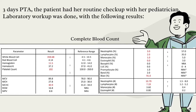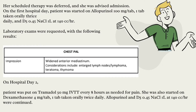Laboratory workup was done and her scheduled therapy was deferred; she was advised admission. On the first hospital day, the patient was started on allopurinol and D5 0.45% sodium chlorine at 140 cc per hour, and laboratory exams were requested. On hospital day 2, the patient was put on tramadol and started on dexamethasone; current medications were continued.